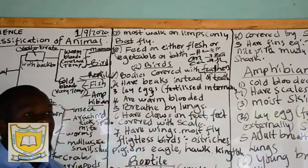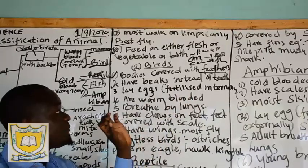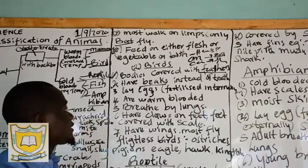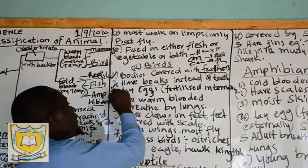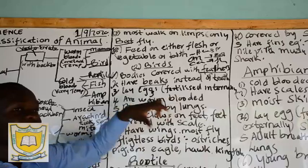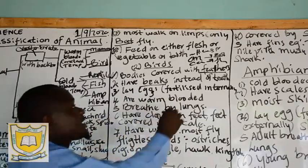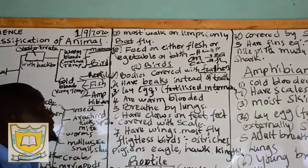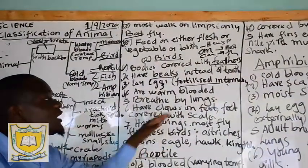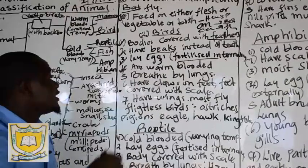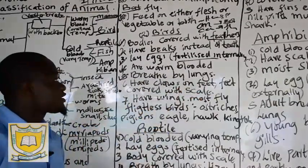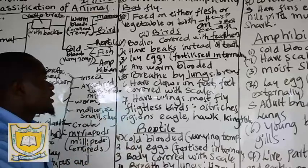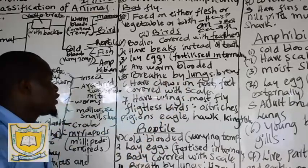Number two: birds have beaks instead of teeth. A beak is the part used for eating, breaking down food substances, and also for protection. Number three: they lay eggs, which are fertilized internally — meaning they have internal fertilization. Number four: all birds are warm-blooded. Number five: they breathe through lungs — using lungs for gaseous exchange, with oxygen coming in and carbon dioxide going out.